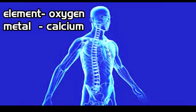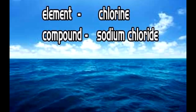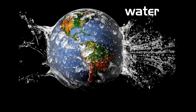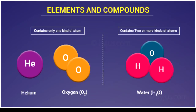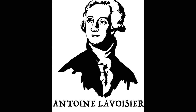In the human body, the element is oxygen, the metal is calcium, and the compound is calcium phosphate. Seawater has chlorine as element, water as compound, and sodium chloride. Elemental substances are made of the same kind of atoms — for example hydrogen, oxygen, sodium chloride, water.